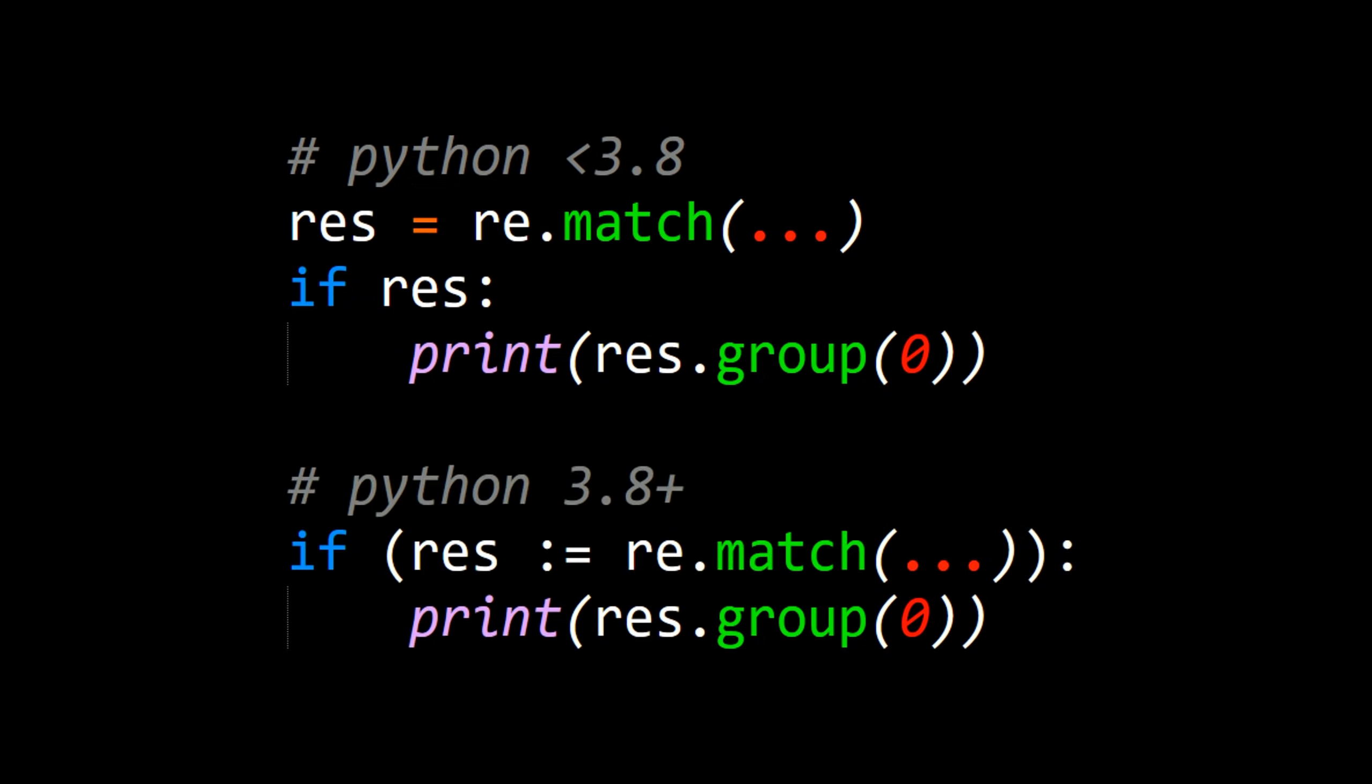In Python 3.8, all that gets combined into a single line that performs the match operation, assigns the result of the match to res, and then checks if res contains a regular expression object.